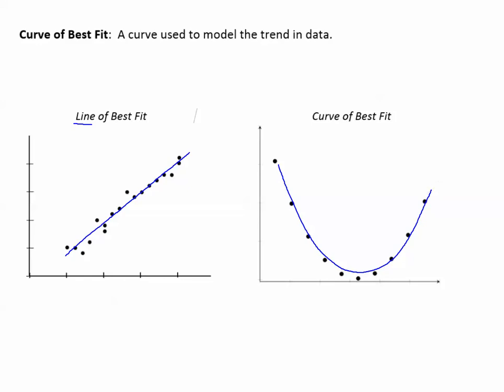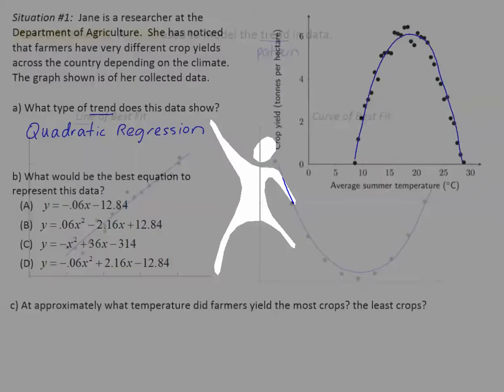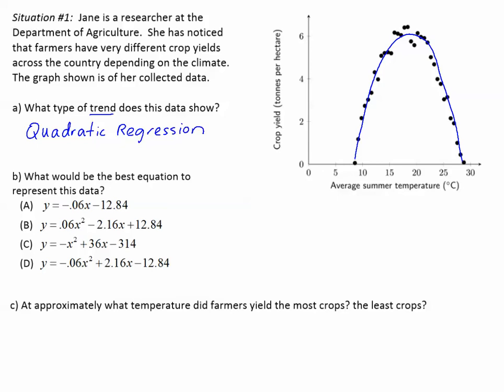A curve of best fit is a curve instead of a line that's used to model the trend in data. Trend means how the data looks like it's going, the pattern. Trend is like saying pattern, the pattern of the data. Let's go back to our problem about the crop yield.